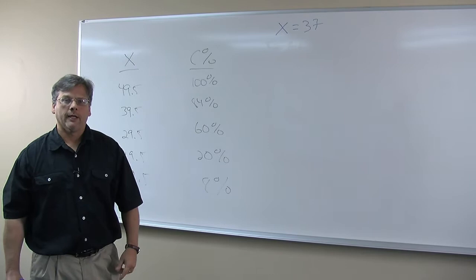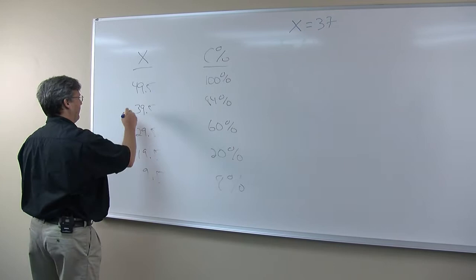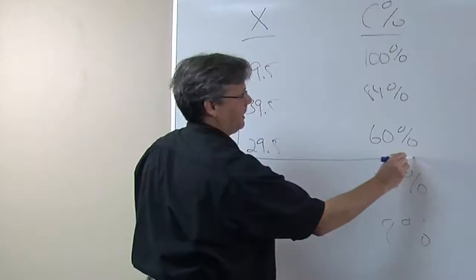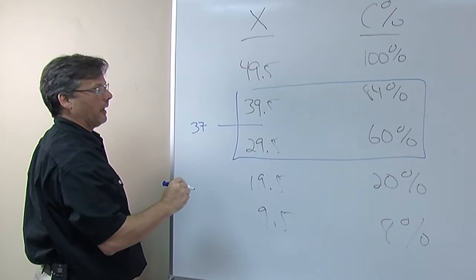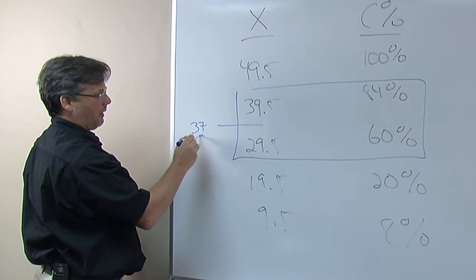So the X-score is 37. Our first step is to find the sandwiching values. By sandwiching values, what I mean is values that are slightly above and slightly below our X-score value. So 39.5 is above and 29.5 is below our X-value of 37.